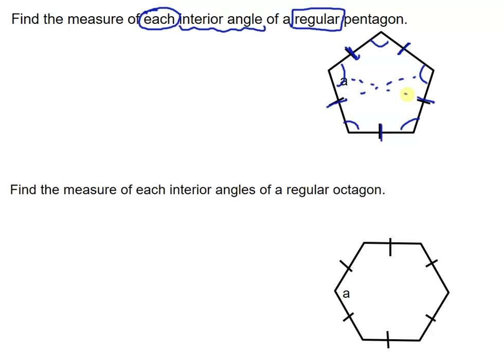So first, we have to figure out the sum of the interior angles. Let's do the S equals 180 N minus 2 equation first. We know that a pentagon has five sides, so we'll do 180, 5 minus 2. So 180 times 3, and when we calculate that, we get 540 degrees.